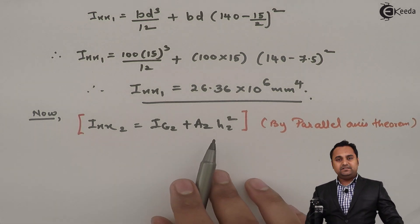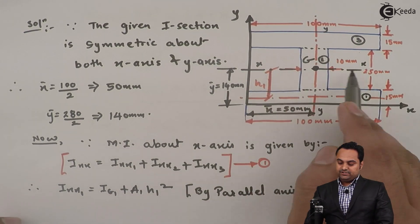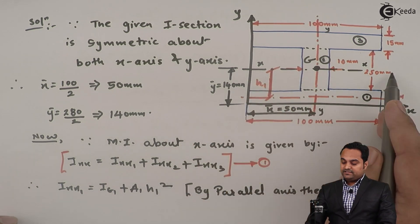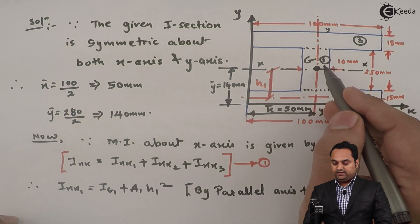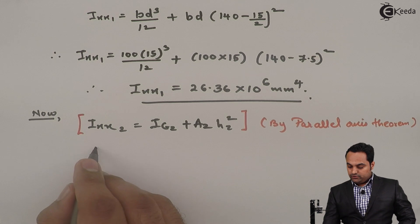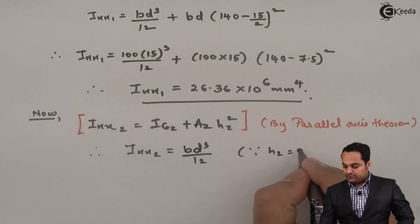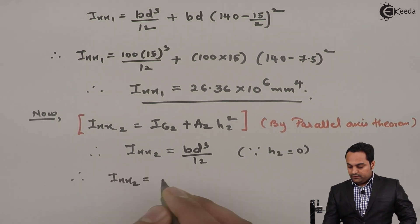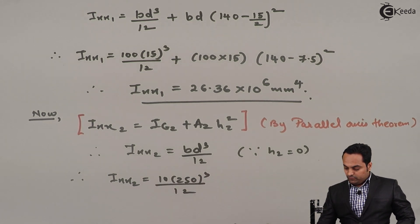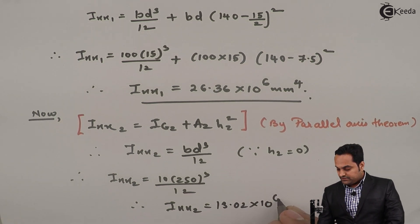For rectangle two, the complete x-axis for the I-section is at 140 mm, and the x-axis for rectangle two is also at 140 mm, so h2 equals 0. This term goes away, leaving Ixx2 equals Ig2, which is bd³/12. With b = 10 and d = 250, we get 10 into 250 cubed divided by 12. The value of Ixx2 is 13.02 × 10⁶ mm⁴.